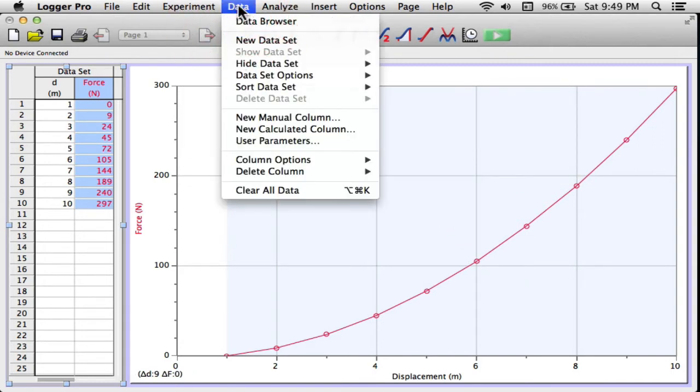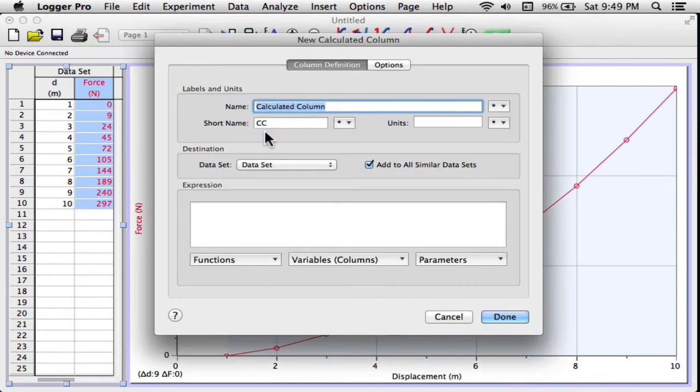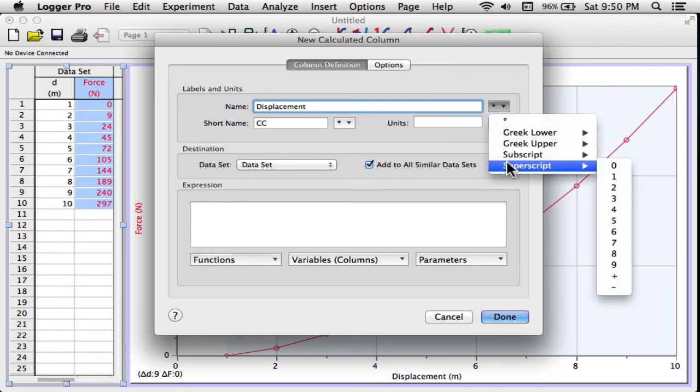I'll go to data, new calculated column, so all the way down where it says new calculated column. And now I've got to start coming up with my name. I've identified this as an x squared curve, so I'm going to call this displacement, and I want to make a square term appear up here. I'm going to choose on the right where the star is, click on that little triangle, go all the way down to where it says superscript. Notice there are all kinds of variables I can play with.